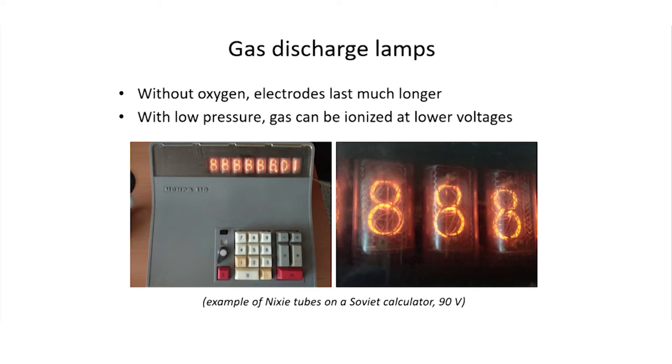The anode is a thin metal screen in front of the cathode. These tubes needed about 90 volts to operate. At these low voltages, although the entire tube is filled with neon, only the gas near the cathode is ionized. If we wanted instead to make the whole tube glow, then a much higher voltage would be needed.